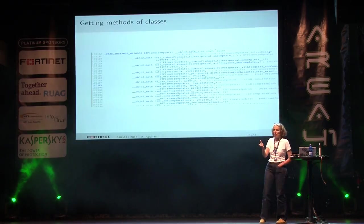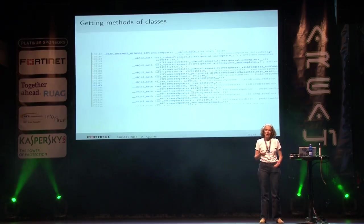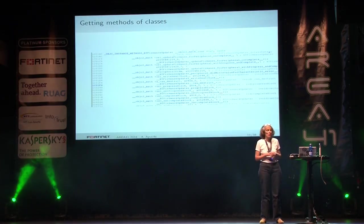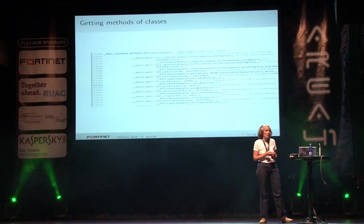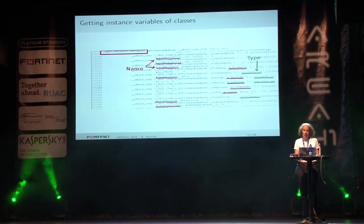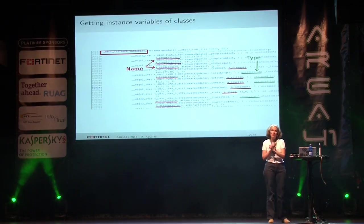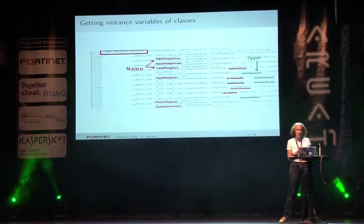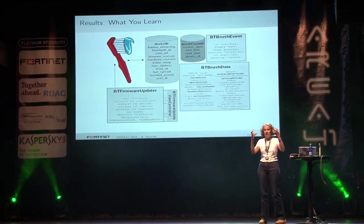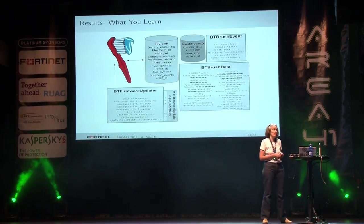You can also seek the implementation design by looking at the disassembly — specifically the Objective-C segment at the end of the code. You can list all methods for a given class. This is the BT firmware updater class, and we get the full list of methods. We can also get all the instance variables for this class, including their names and types. From that, you can reconstruct the implementation data design of the application and understand how the connected toothbrush works.